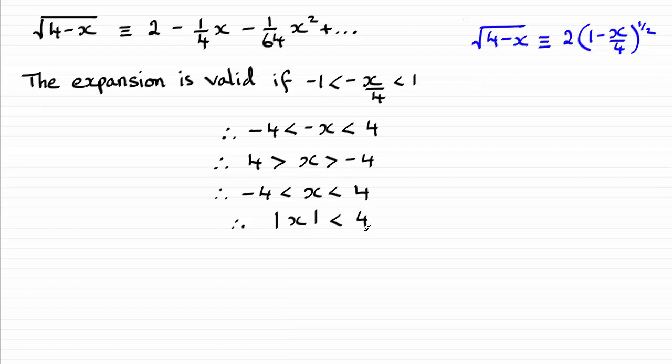Now the point is if x is 1, clearly that's in this interval here. So what we've got then is yes, it is valid. When x equals 1 it's valid. We can work out the square root of 3.